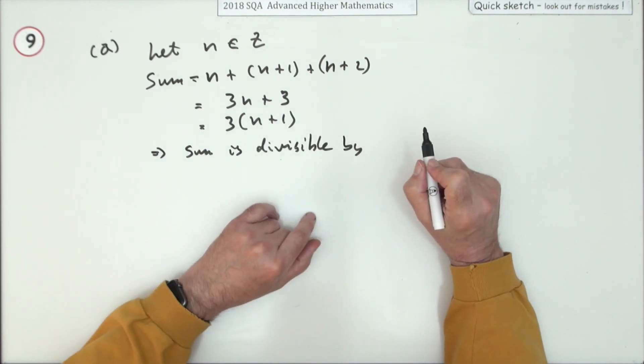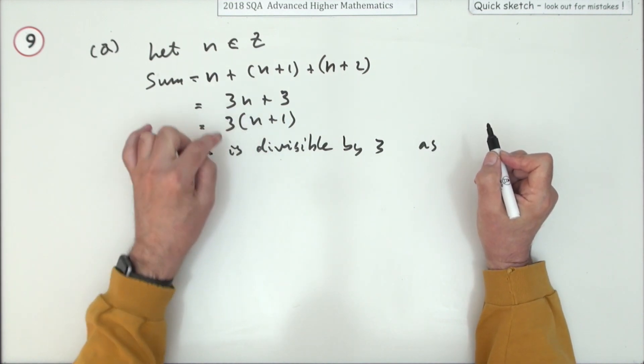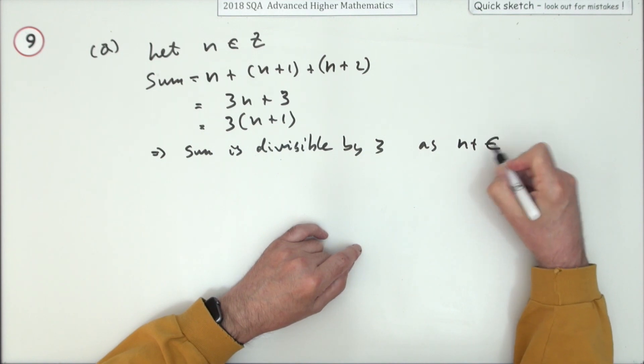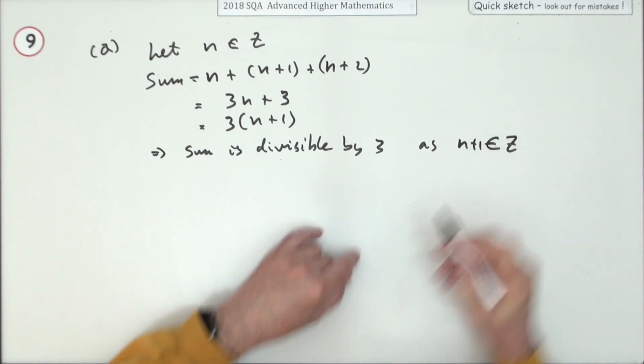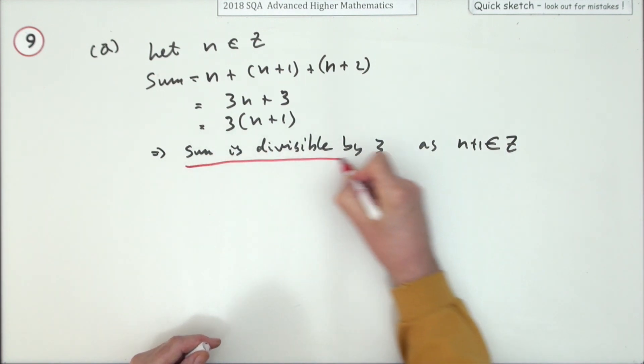And there is a reason - because it'd only be divisible by three if that was an integer. As n plus one is still an integer, they may not require to see that part, but that's part of the proof really.